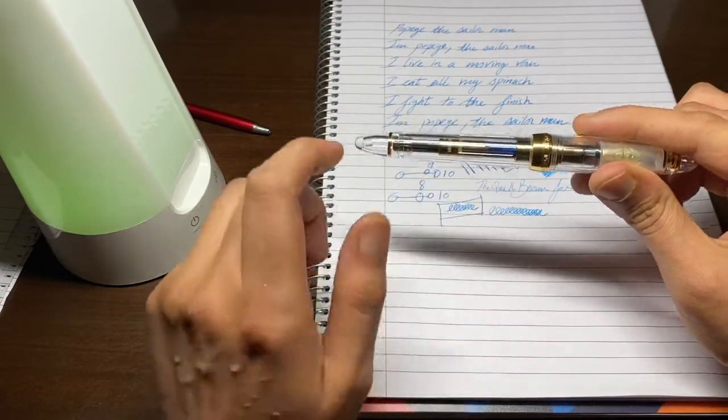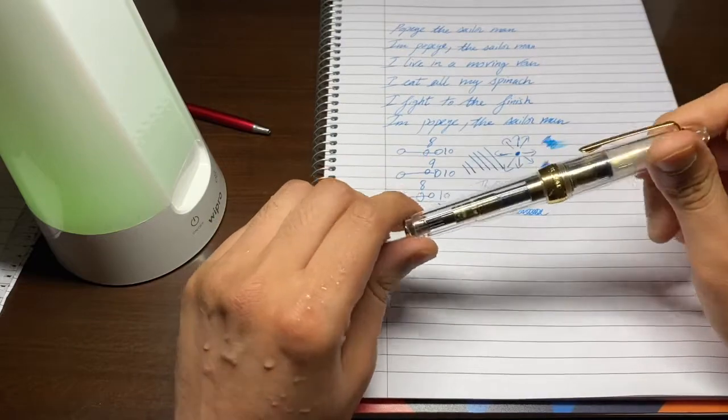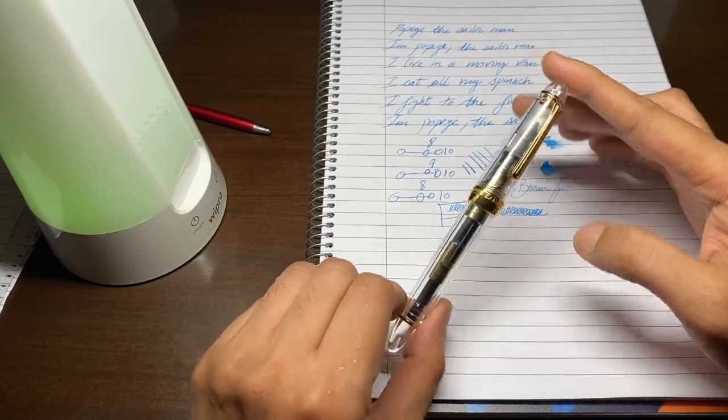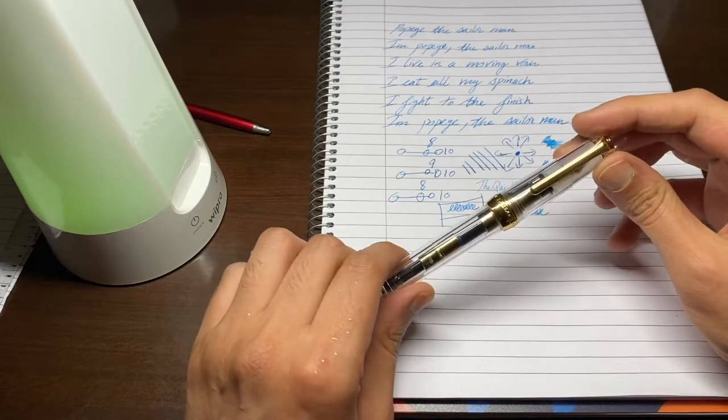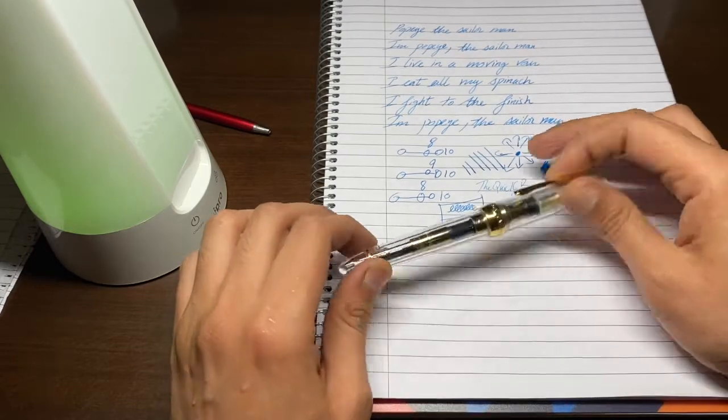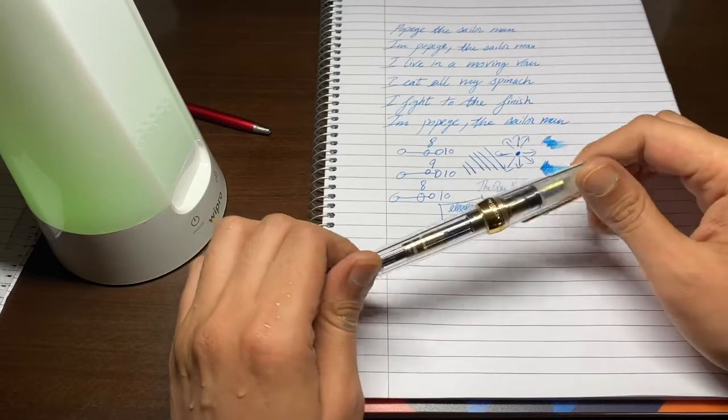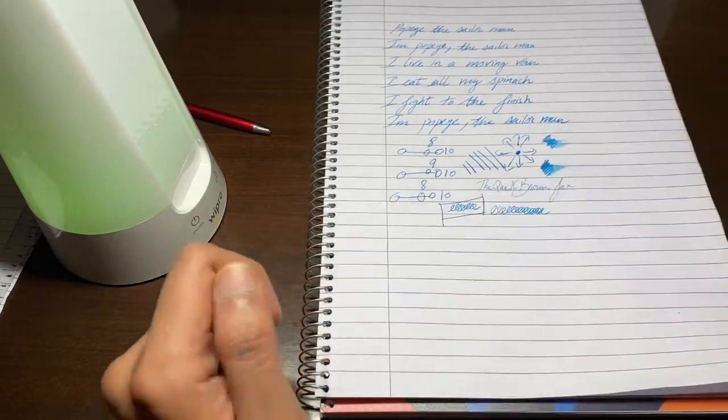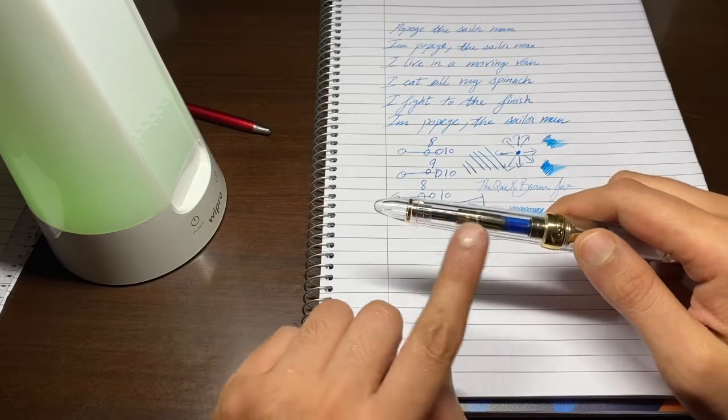And apart from that I love the fact that you can see the amount of ink that is there in the pen itself. Overall it's a very unique look for a pen. Platinum also has a pen like this, they're very similar when it comes to the overall aesthetics. Now the things that I don't like about this pen...